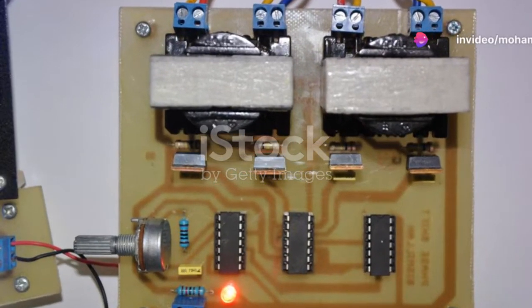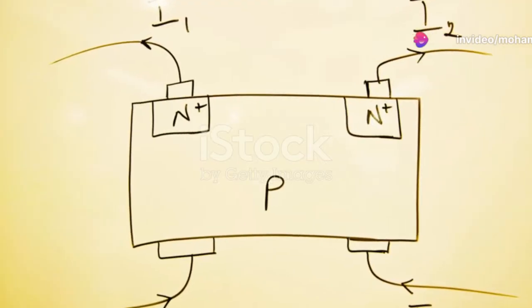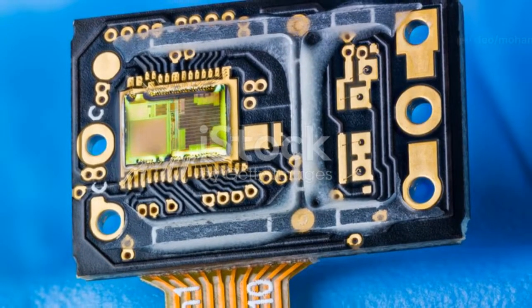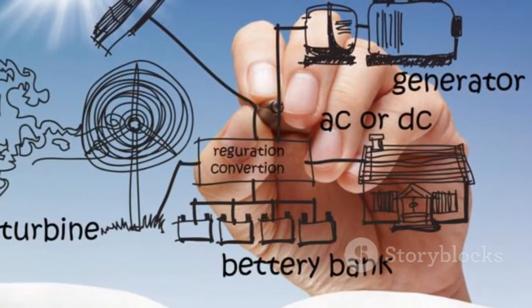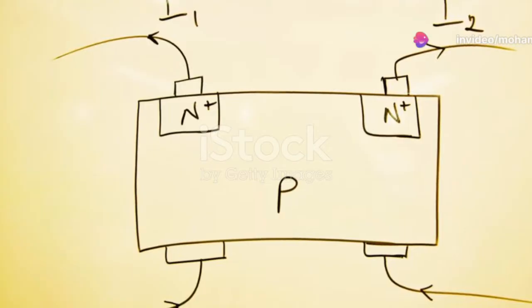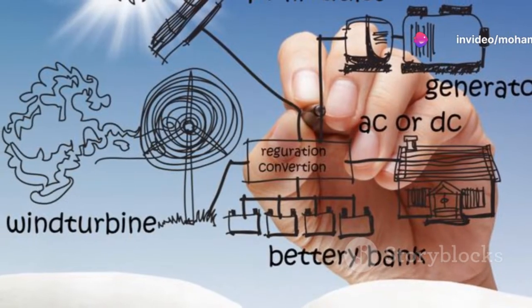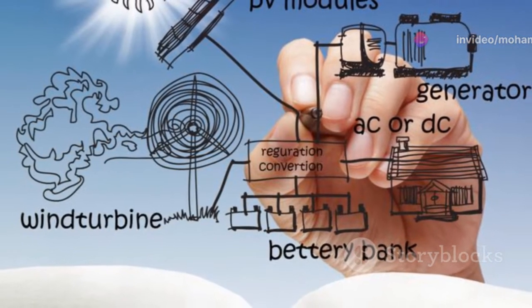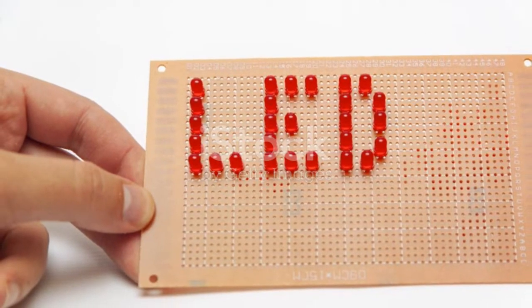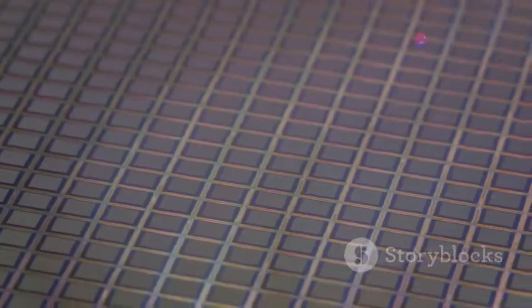In what we call a reverse bias condition, the positive P side is connected to the negative terminal of a power input, and the negative N side is connected to the positive terminal. Now, picture a tiny depletion layer sandwiched between the P and N junctions. This layer is characterized by having very few electrons and holes, which are the vacancies where electrons can exist. But the magic happens when light strikes this layer. Thanks to the photons in the light, an electron-hole pair is formed in the depletion layer. This formation sparks off the flow of current.